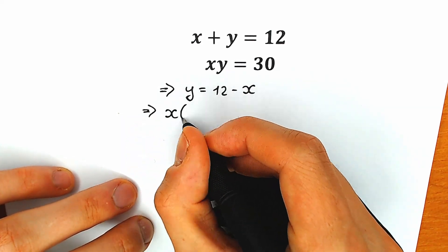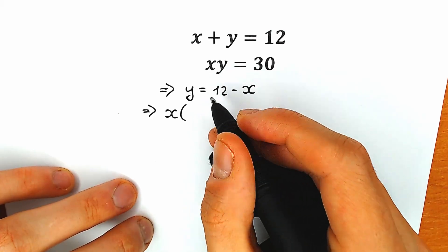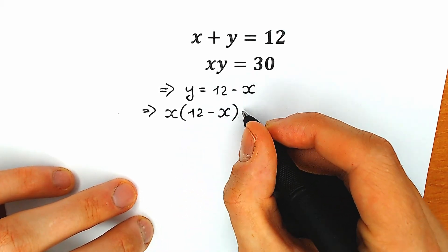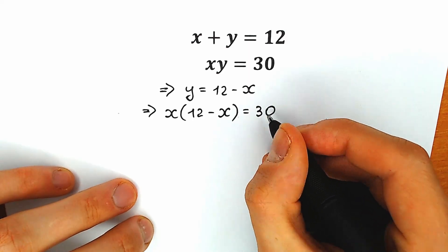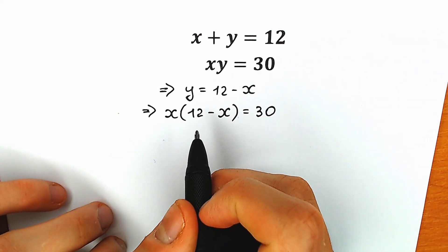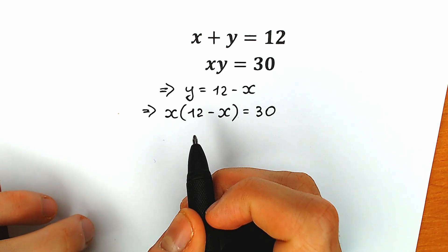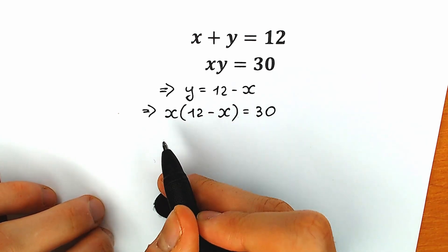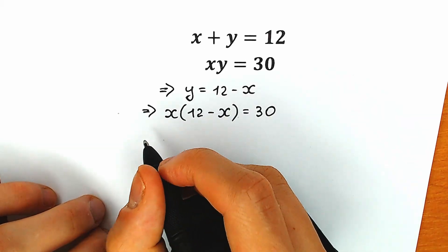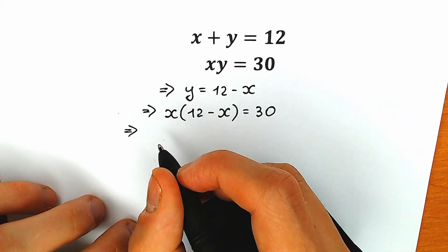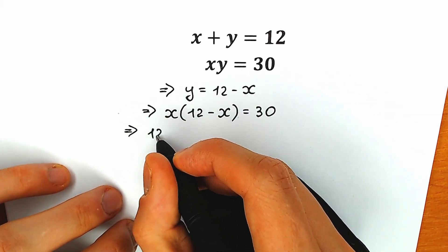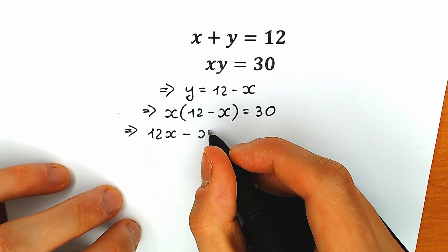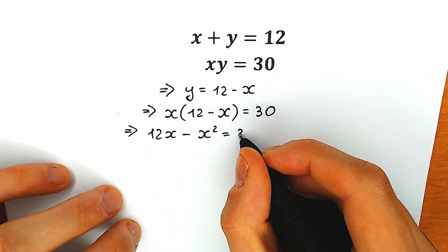So we have x times — instead of y we plug in 12 minus x — equal to 30. Right now let's simplify this expression. It's much easier to work with one variable, and we have exactly that case — we have only x. So in this equation we can solve it for x. We get 12x minus x squared equals 30.